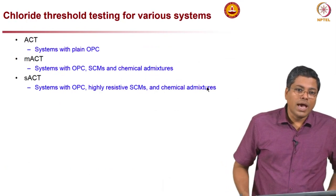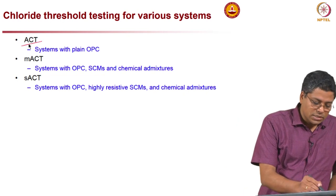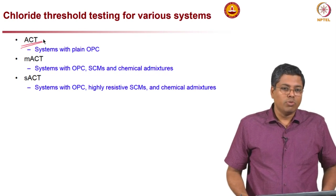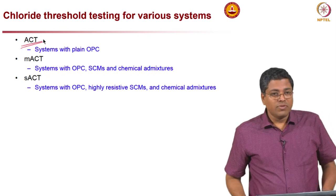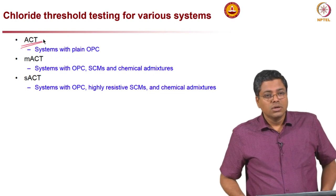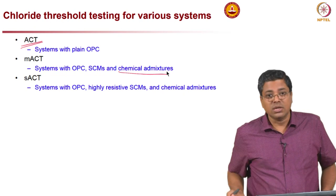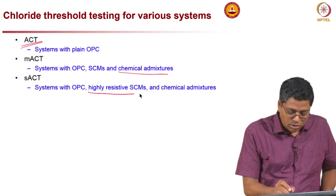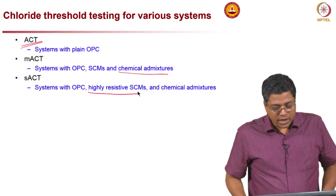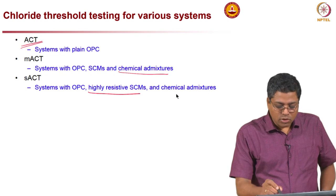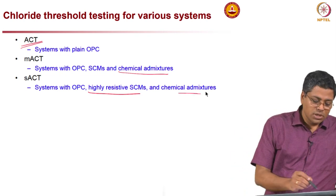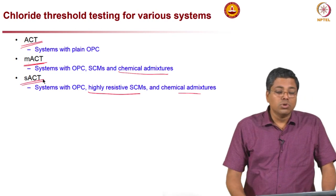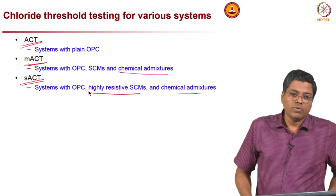First, I will talk about the accelerated chloride threshold test — ACT — which was developed for determining chloride threshold of OPC systems without any inhibitors. We found some challenges in using that test method for systems with chemical admixtures, mainly corrosion inhibitors. Later we found that for highly resistive supplementary cementitious systems — such as limestone calcium clay systems and fly ash — it was not easy to adopt this method. So we had to modify it and develop a more suitable test method for highly resistive systems.